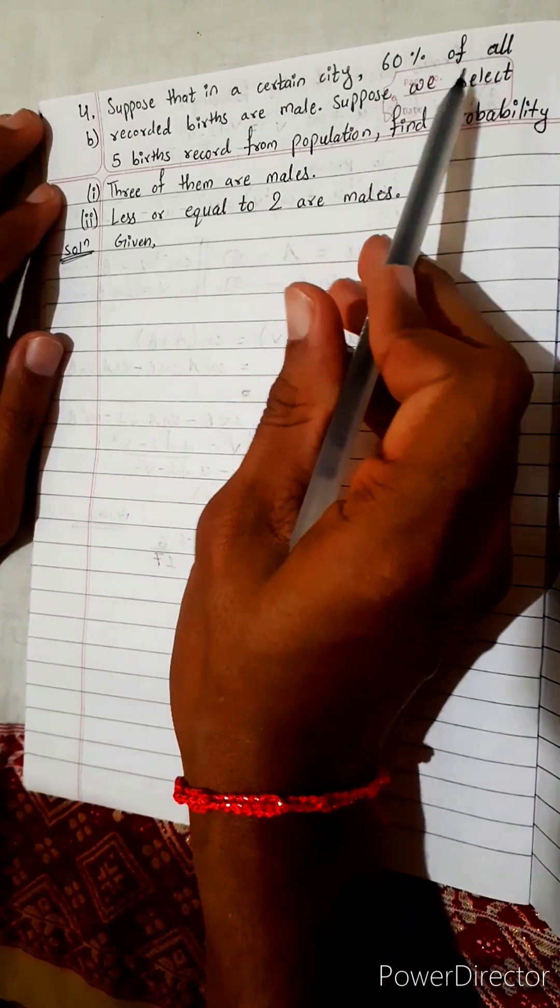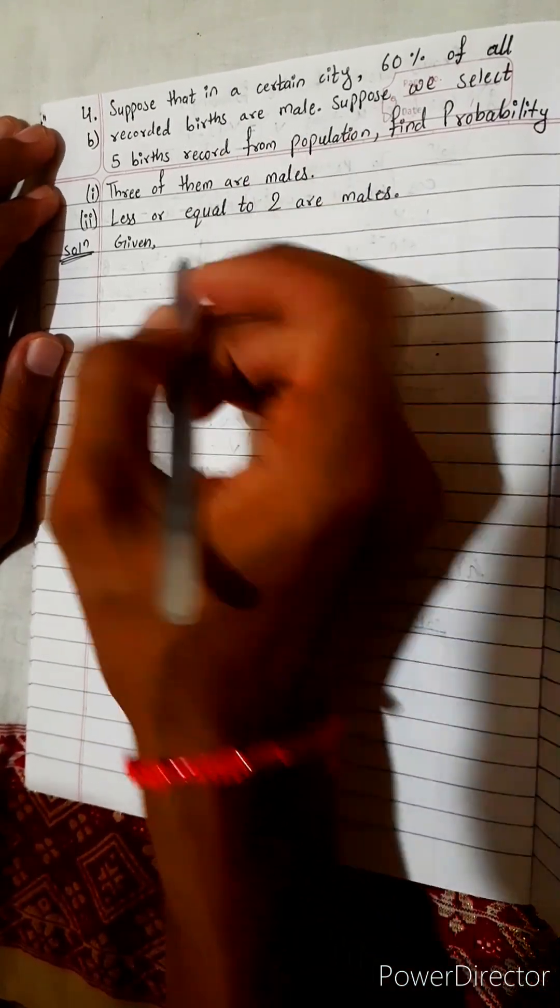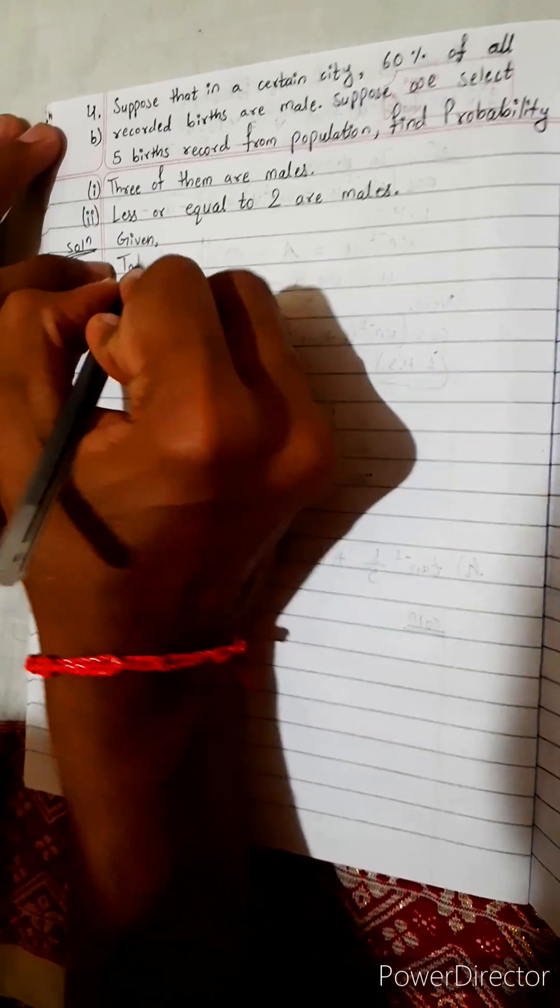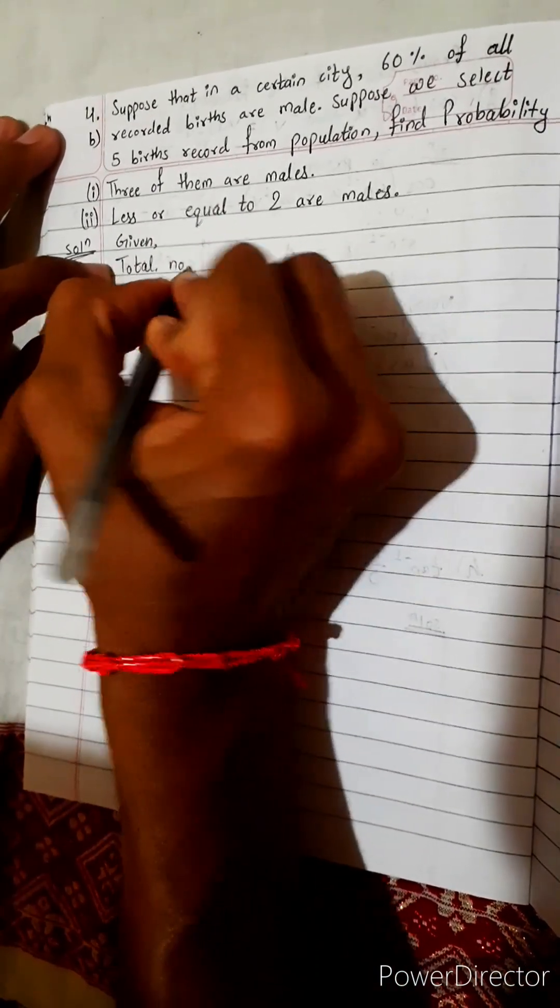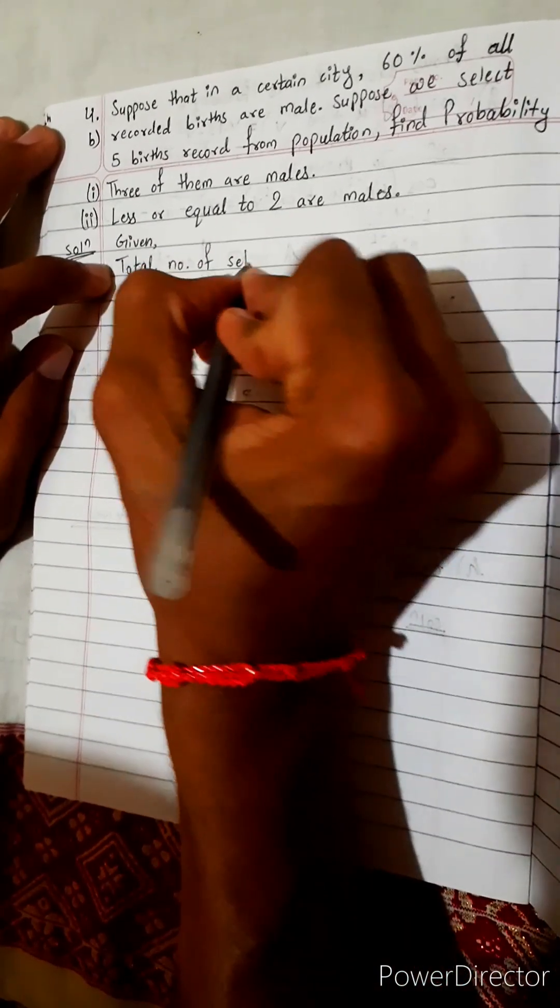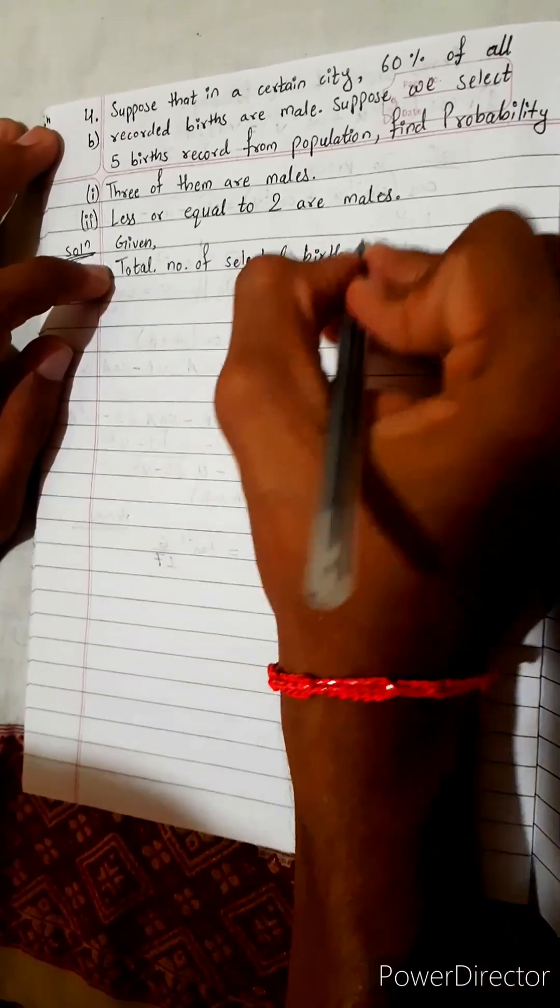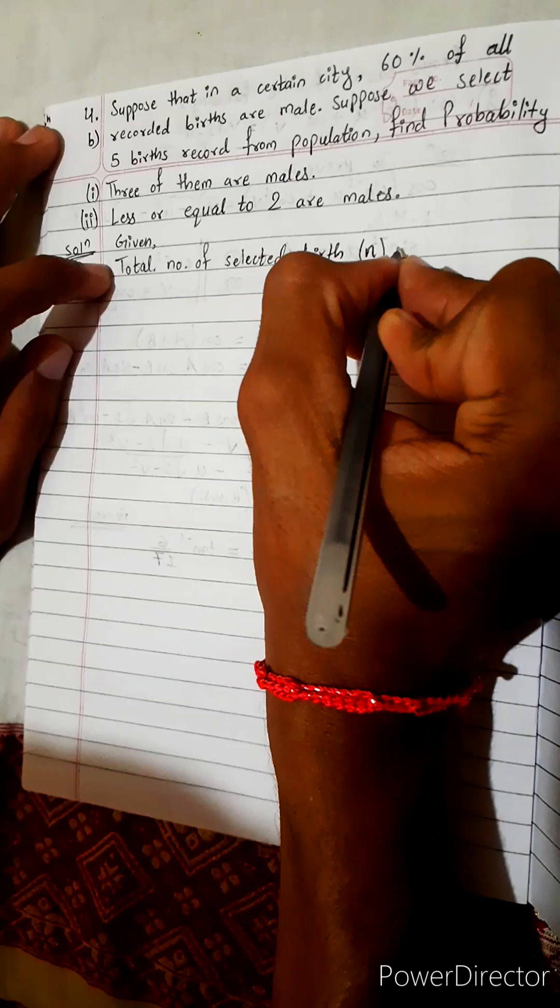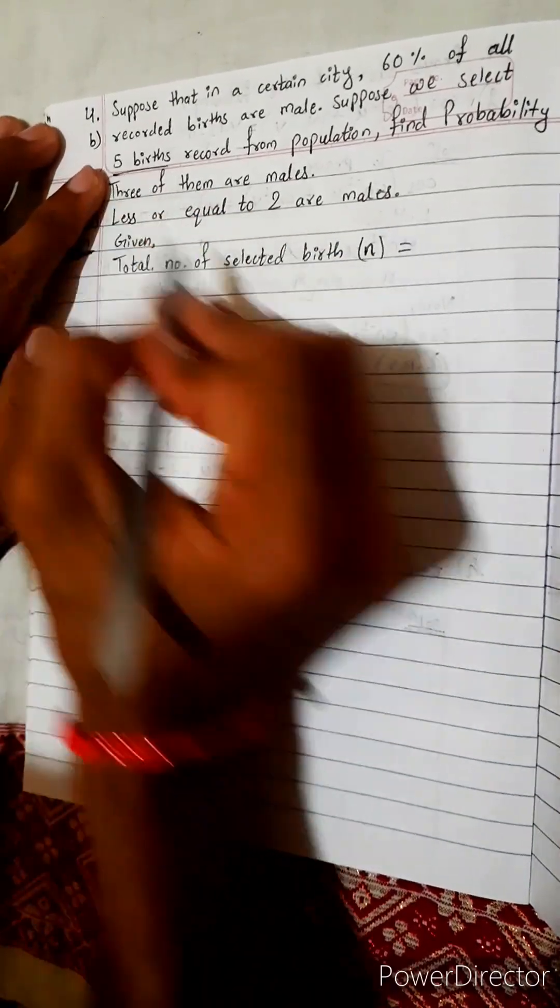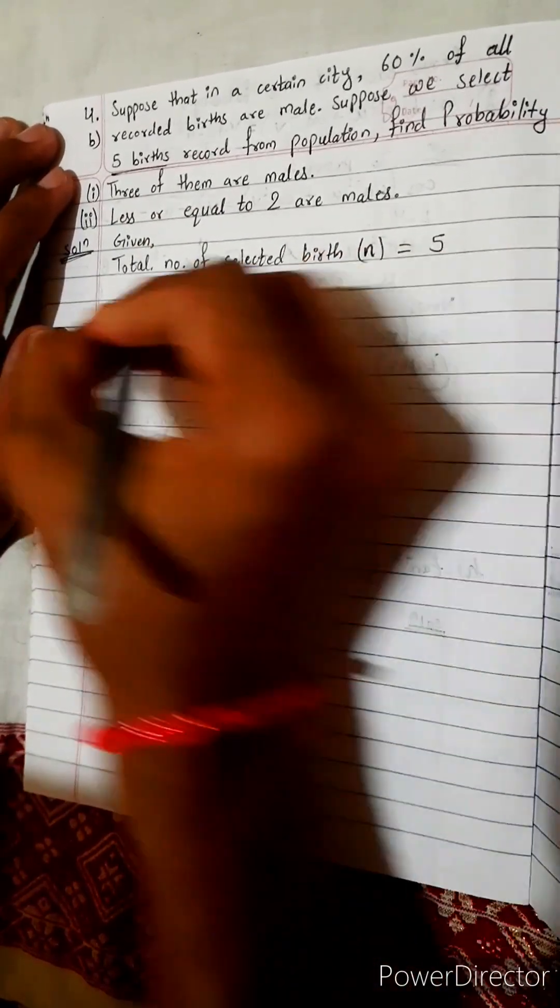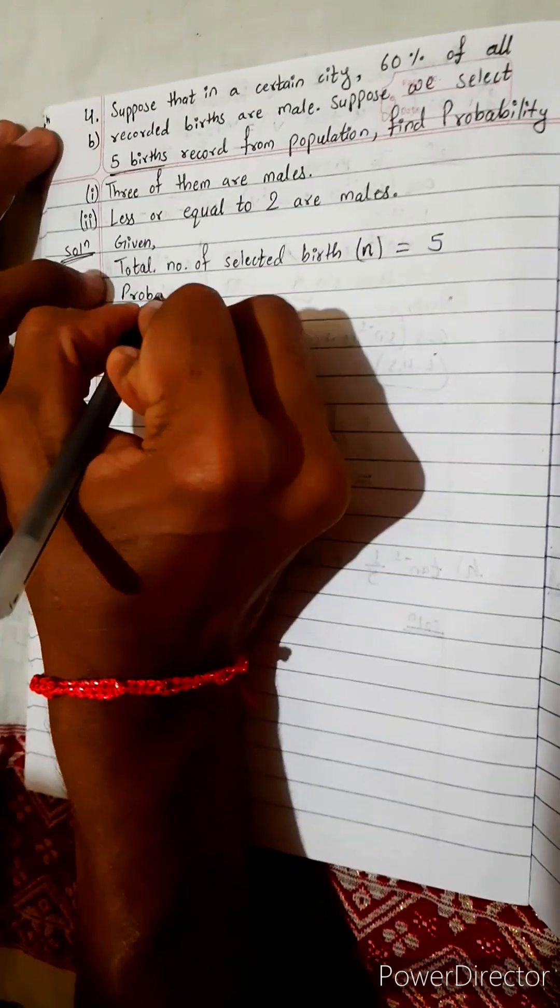See next question: In a city, 60 percent of recorded births are male. Given total number of selected births, first we write always n, total number. How much is n? Five births are selected, so n equals 5. Now probability of male...